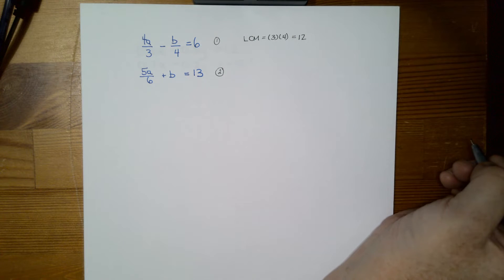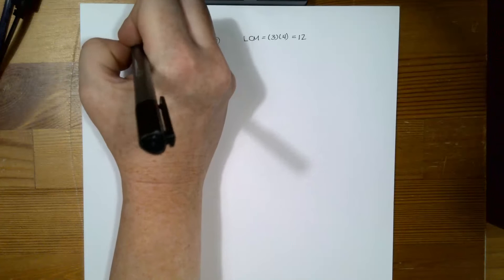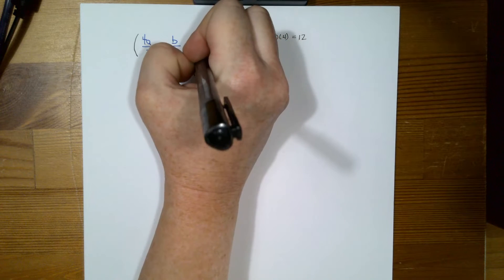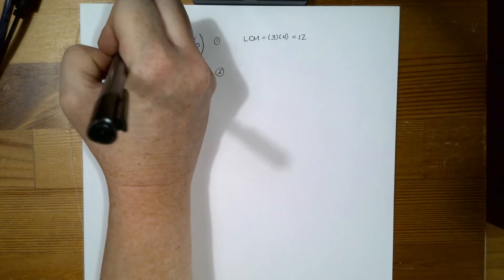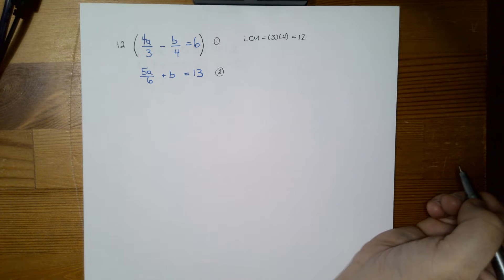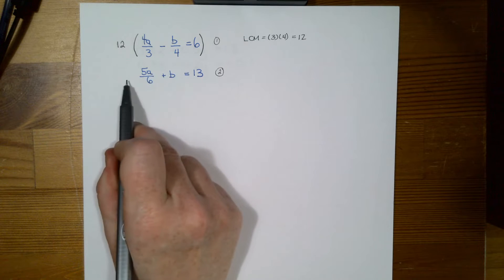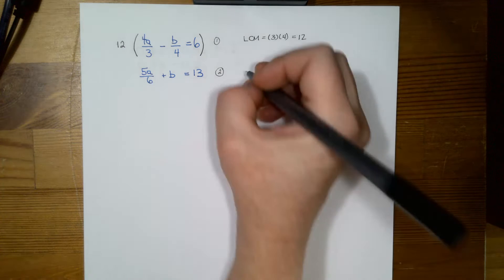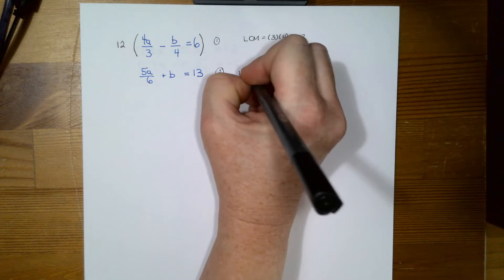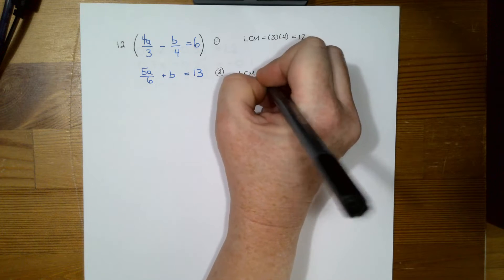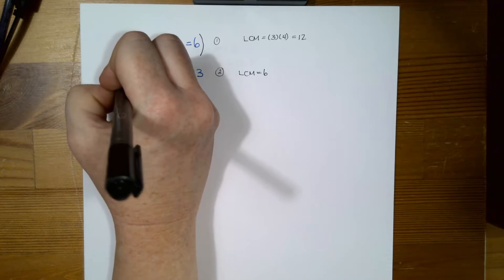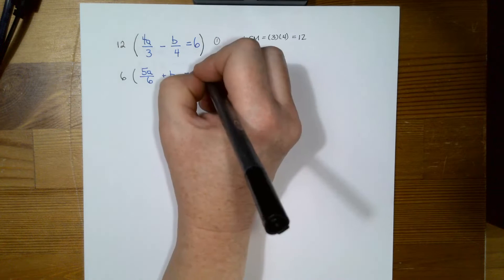So what that means then is I want to multiply this whole expression by 12 in order to clear my fraction. So if I look here, I also have fractions. Fortunately, I only have one, so then I know that my lowest common multiple of that is 6. So that means I want to multiply this whole expression by 6.